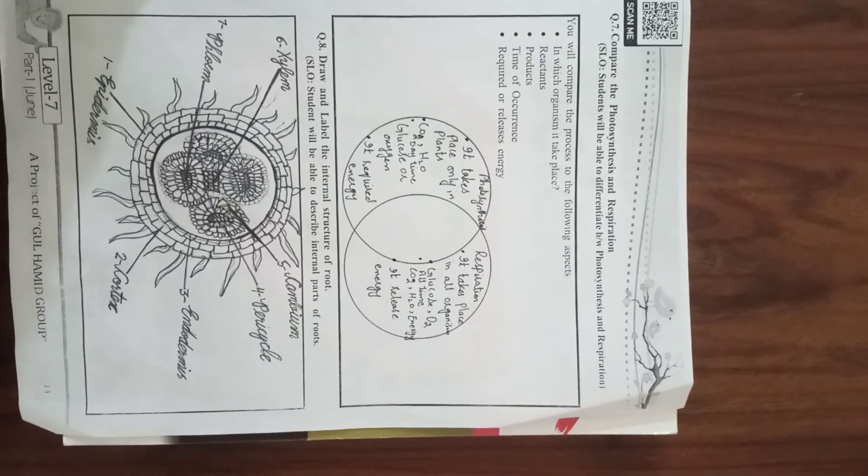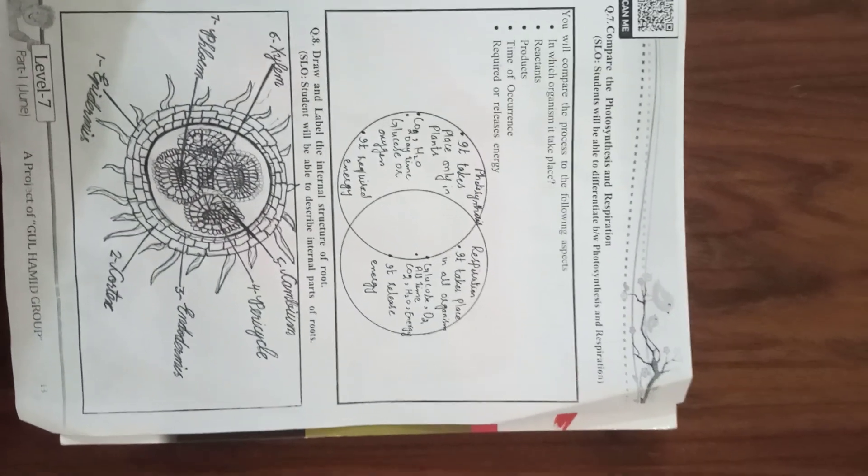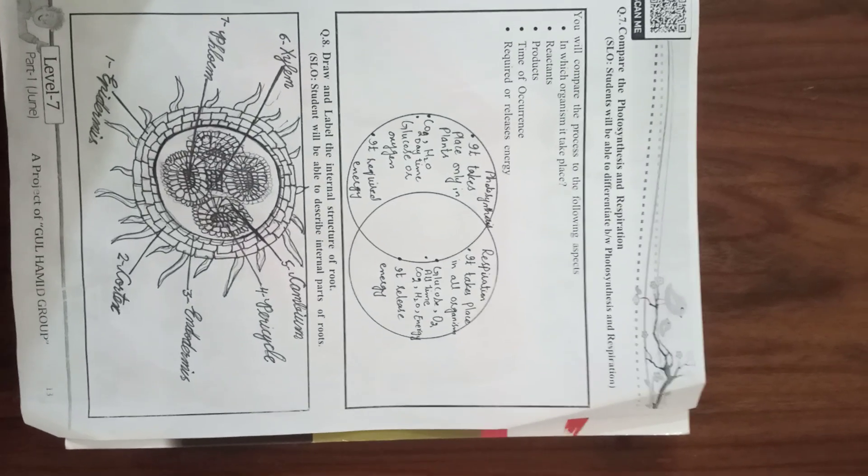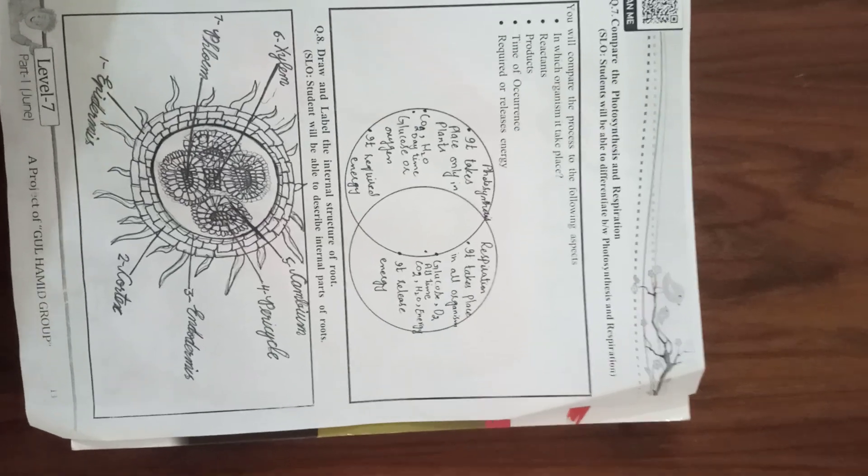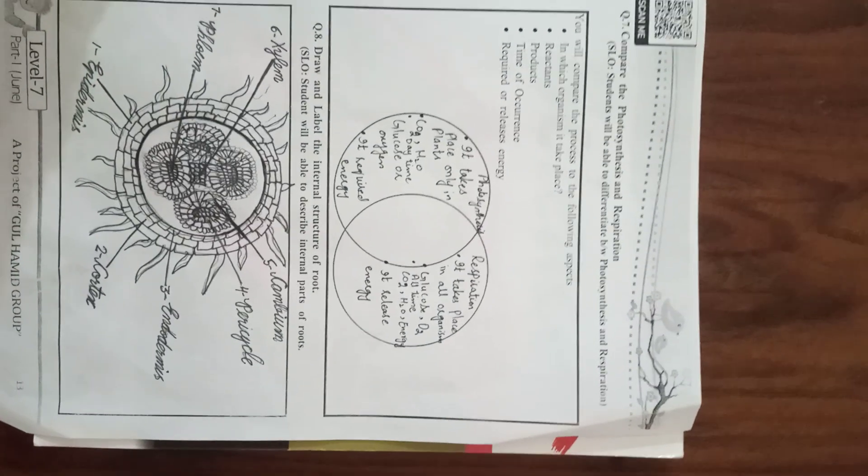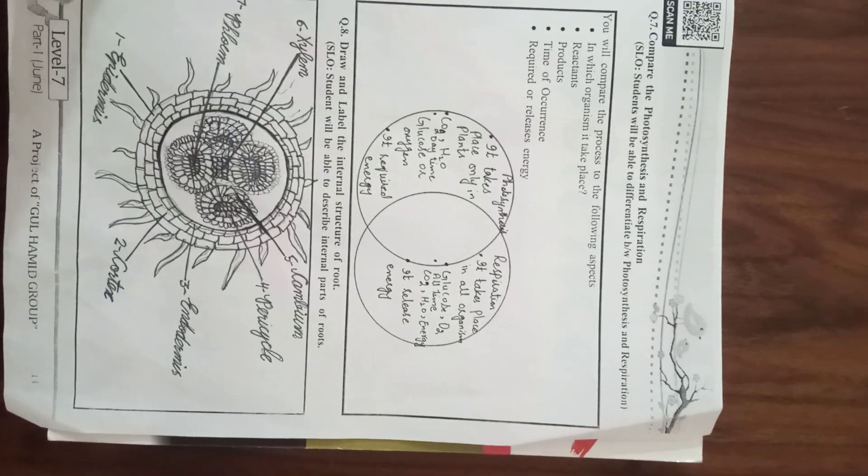The reactants of photosynthesis: carbon dioxide and water. While the reactants of respiration: glucose and oxygen. The products of photosynthesis: glucose and oxygen. And the products of respiration: carbon dioxide, water, and energy.